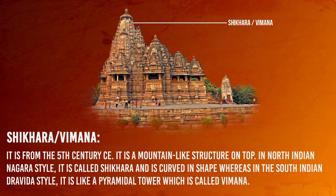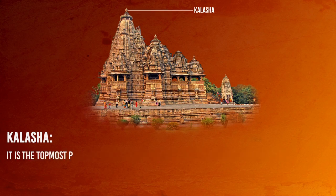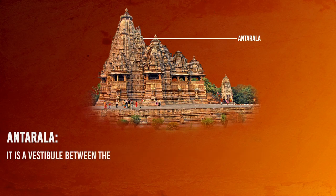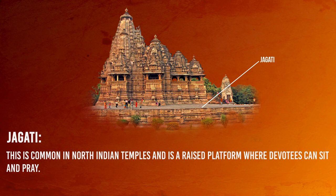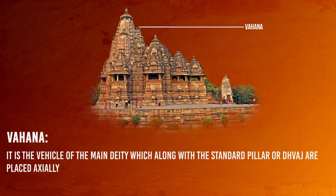Shikara or Vimana, dating from the 5th century CE, is a mountain-like structure on top of the temple. In the North Indian Nagara style it is called the Shikara and is curved in shape, whereas in the South Indian Dravidian style it is a pyramidal tower called the Vimana. Amalaka is a stone disc seen at the top of the temple, mostly in North Indian temples. Kalasha is the topmost part of the temple, also mainly seen in the North Indian style. Antarala is the vestibule between the Garbhagriha and the Mandapa. Jagati is a raised platform common in North Indian Nagara style temples where devotees can sit and pray. Vahana is the vehicle of the main deity, placed axially along with the standard pillar or Dwaja.